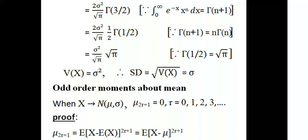Let's discuss the normal distribution of odd-order moments about the mean. That is, when X follows N(μ, σ), then μ₂ᵣ₊₁ equals 0, where r equals 0, 1, 2, 3, etc. That is, a random variable following normal distribution with mean μ and standard deviation σ — the odd-order moments of normal distribution equal 0.